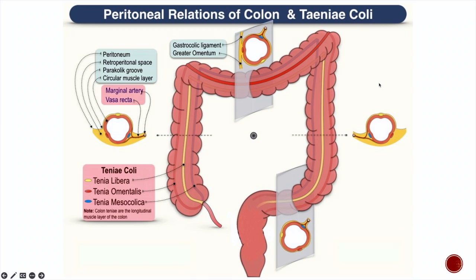As already described, the transverse mesocolon and sigmoid mesocolon cause the colon to sag down because they are attached to the mesentery. Because the transverse colon is connected to the transverse mesocolon for its blood supply, Tinea Libera, which was free anteriorly, comes to lie anteroinferior. Tinea Omentalis comes to lie anterosuperiorly. And Tinea Mesocolica, being attached to the transverse mesocolon, comes to lie posteriorly in the transverse colon.